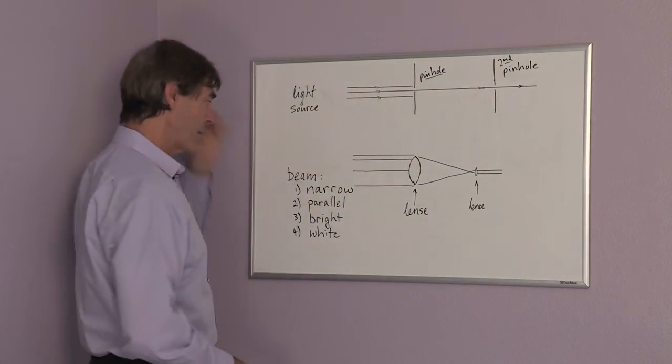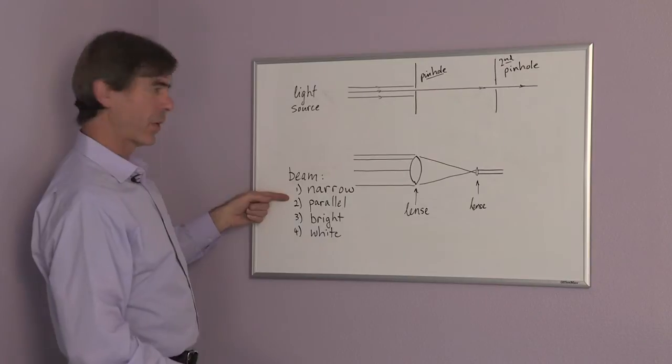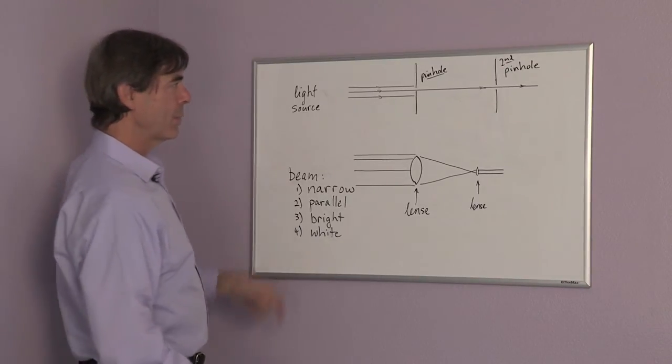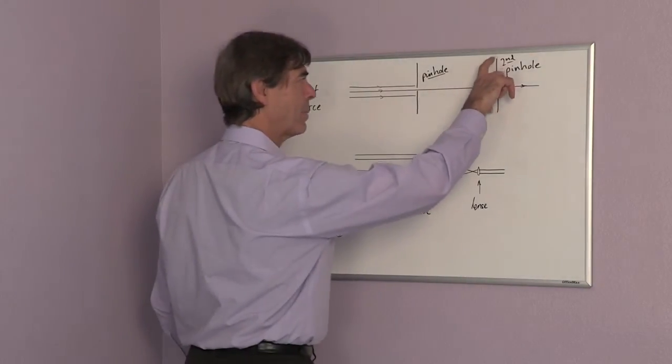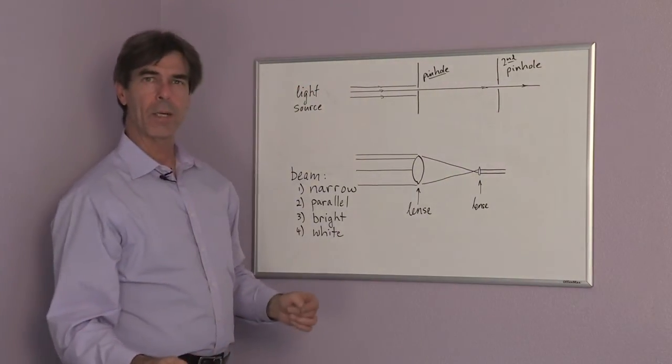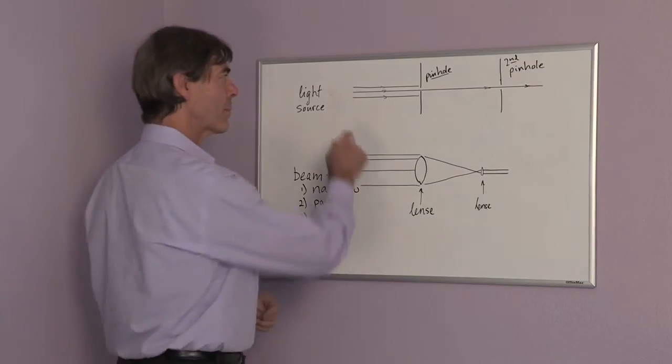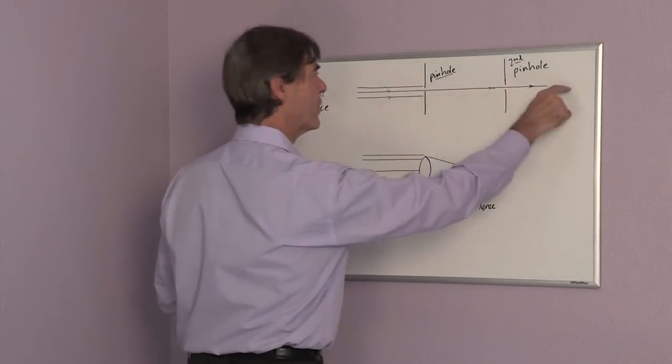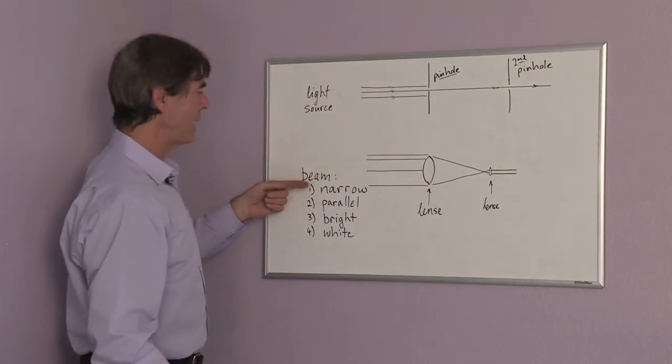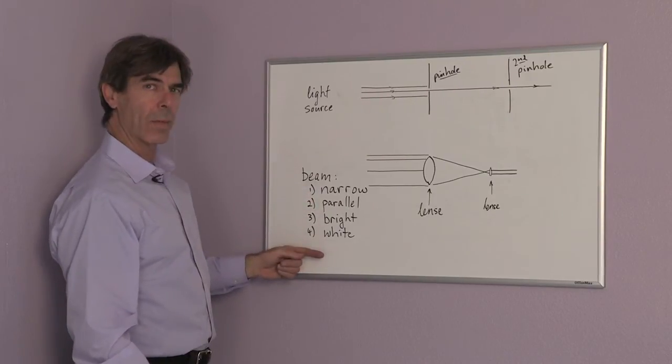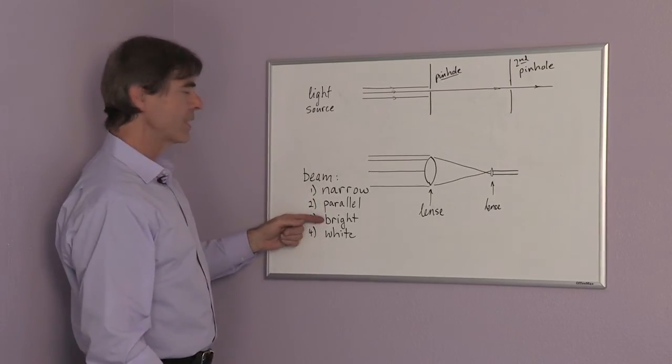It's not quite parallel. To make it parallel, we would take a second pinhole—this could be again in your shoebox—and only light going directly through gets through. So you've made it narrow, parallel, and white because you're using sunlight. However, it's not very bright, and you may or may not be able to get by with this.